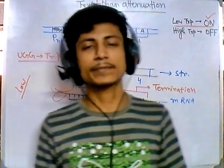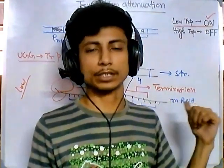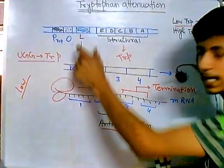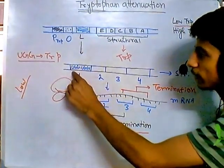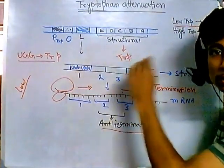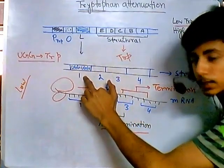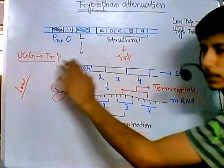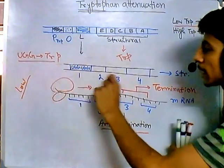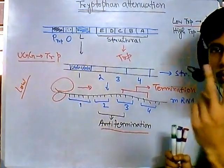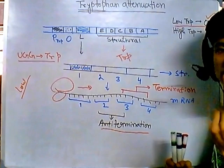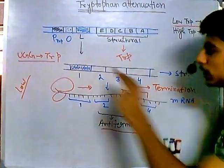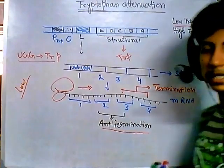So in summary, that is the attenuation process: low tryptophan → operon ON; high tryptophan → operon OFF. The most important element is the leader peptide sequence, which contains precisely two tryptophan codons (UGG UGG) in region 1. This two-codon design is what makes the ribosome sensitive to tryptophan availability and drives the entire attenuation mechanism.